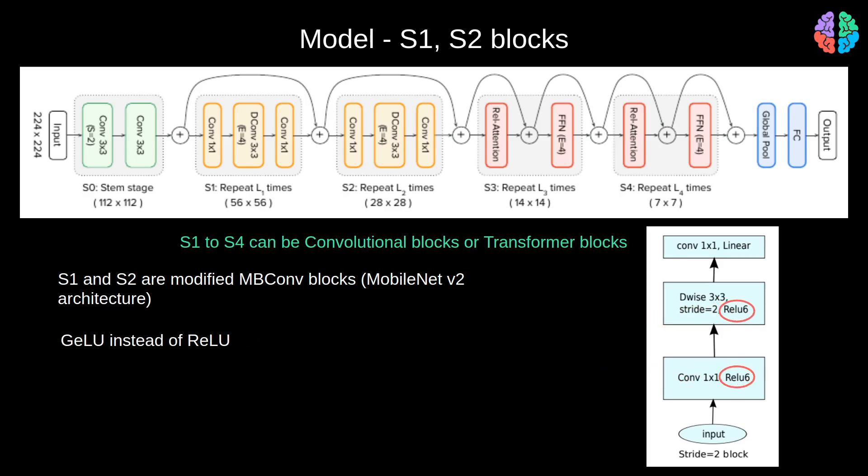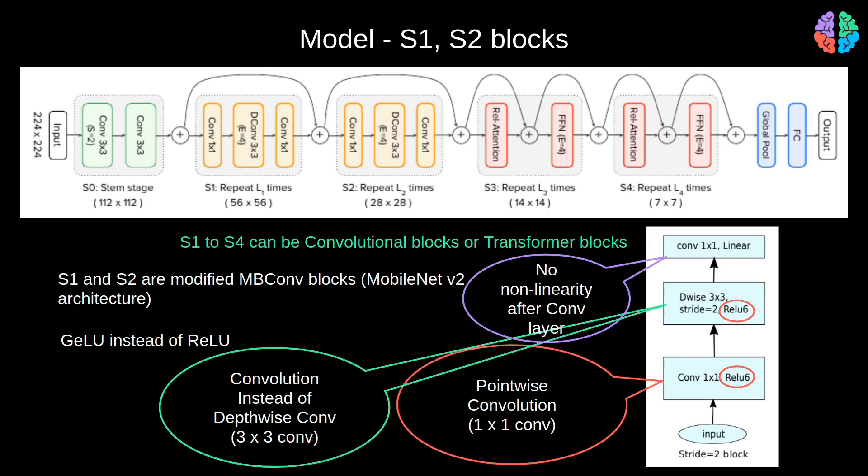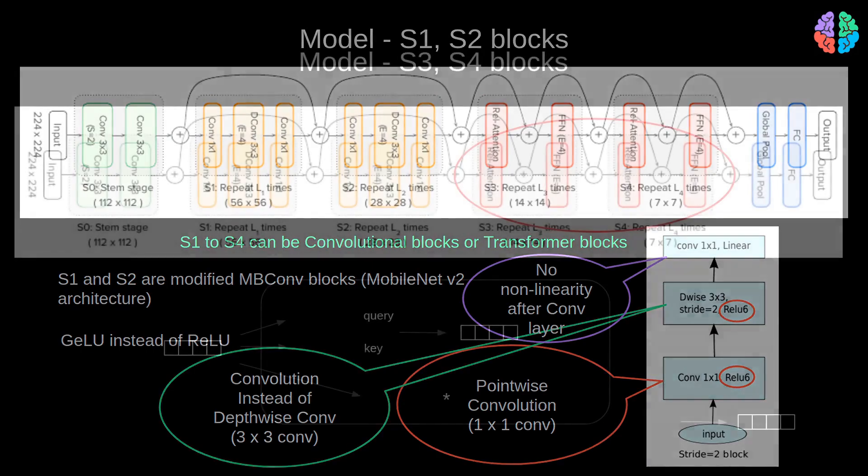The next change is that they simply use convolutions instead of depthwise convolutions for the down sampling stage of the network. This they say that the depthwise convolution is slower for small networks. There's no change to the pointwise convolution of the MBConv block and there's also no non-linearity for the conv layer. With those changes to the MobileNet architecture, let's move on to the relative attention which happens within the transformer block which is stages 3 and S4.